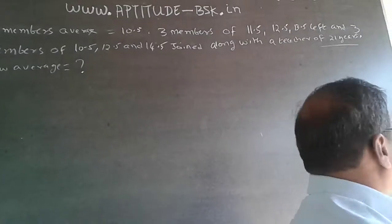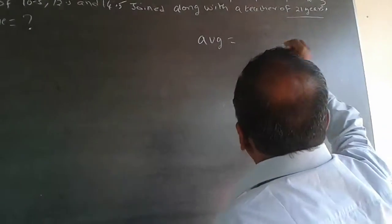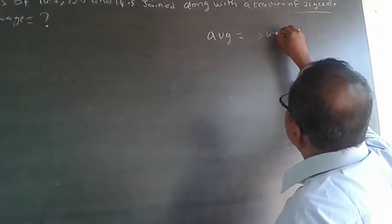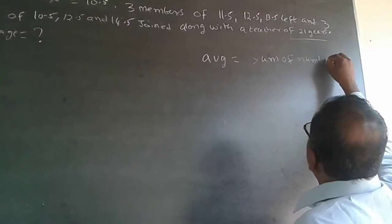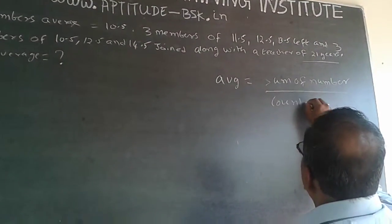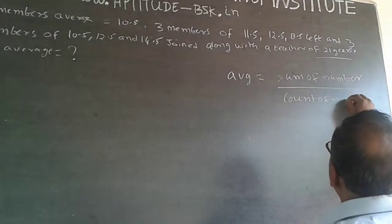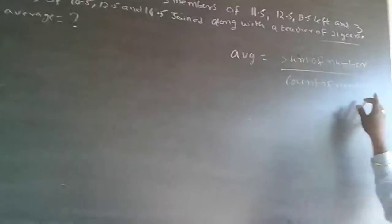And average is always - average will be equal to sum of the numbers divided by count of numbers. Sum of numbers divided by count of numbers is the average.